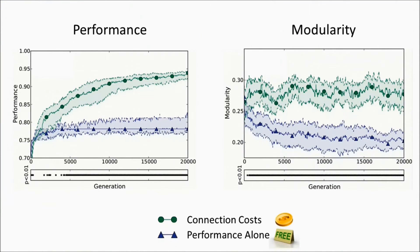The results over 20,000 generations of evolution show that the treatment applying connection costs creates networks with significantly higher performance and modularity than the control treatment guided only by performance.